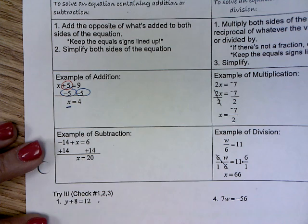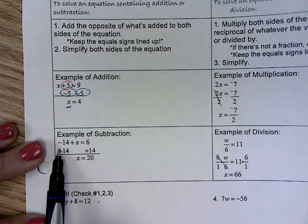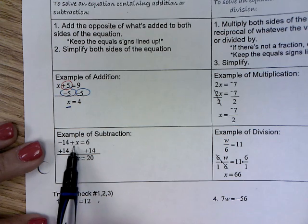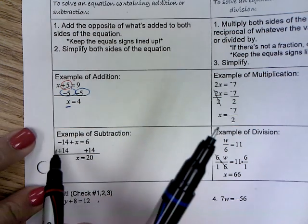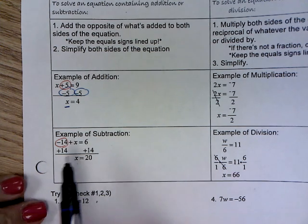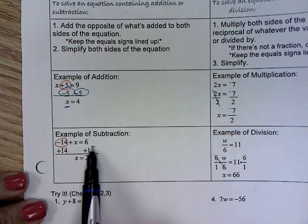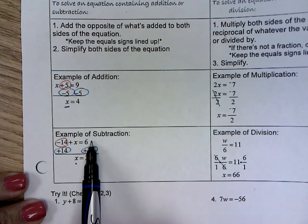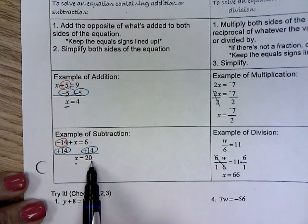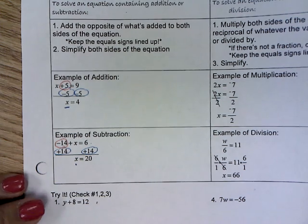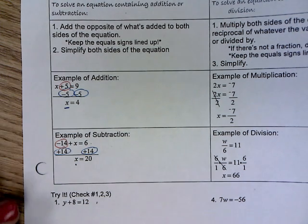Under subtraction, I have a negative 14, which is just really subtraction, added to my x. I need to make it go away, so I'm going to add 14 to both sides. The x comes down, 6 plus 14 equals 20. Negative 14 plus 14 is 0, so I've isolated my variable.